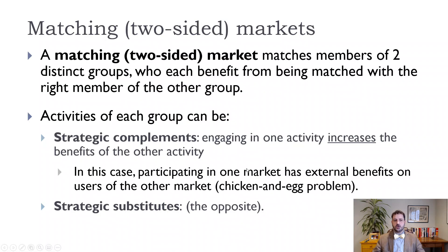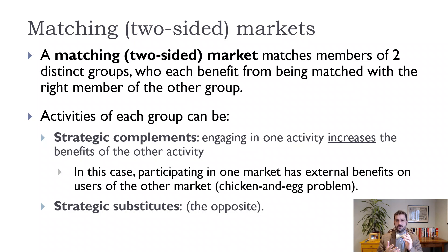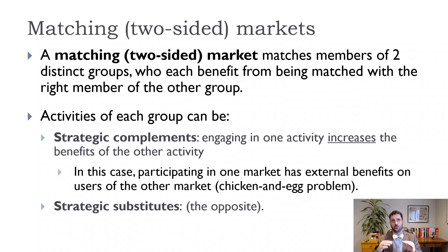We can have two types of these markets. One is where the activities on each side are strategic complements, and that's the area we're going to focus on. The idea is that engaging in one activity — in our Airbnb example, renting apartments — increases the benefit to the other activity, which is looking for apartments to rent. This means we have a chicken-and-egg problem: if you don't have enough people listing apartments to rent, there's no point in going on the site and looking, and if there's nobody looking, there's no point in listing your apartment.